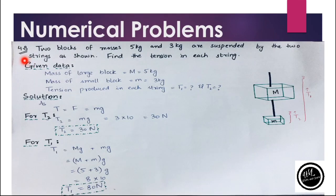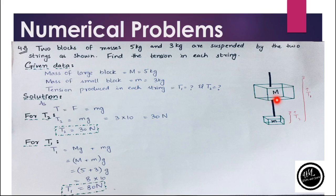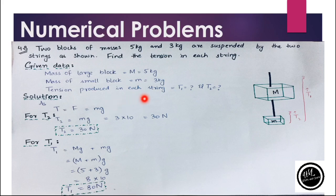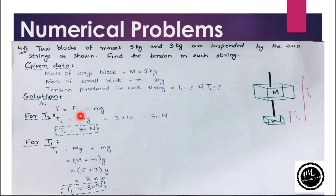Moving on to numerical 4.8. The statement is: two blocks of masses 5 kg and 3 kg are suspended by two strings as shown in the figure. Find the tension in each string. The larger block is represented by capital M and the smaller block by small m. Mass of the larger block is 5 kg and mass of the smaller block is 3 kg. The tension produced in the string is balanced by the weight of the blocks, where weight equals mg.